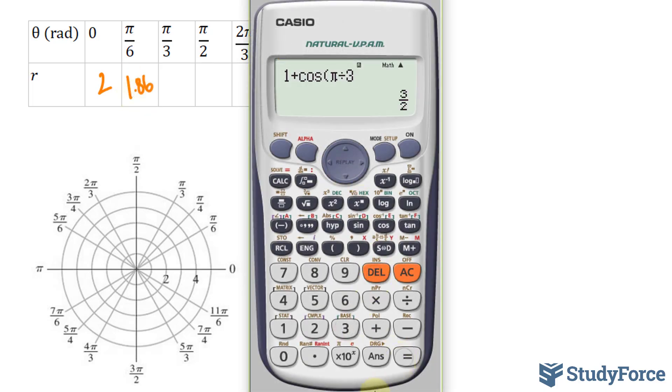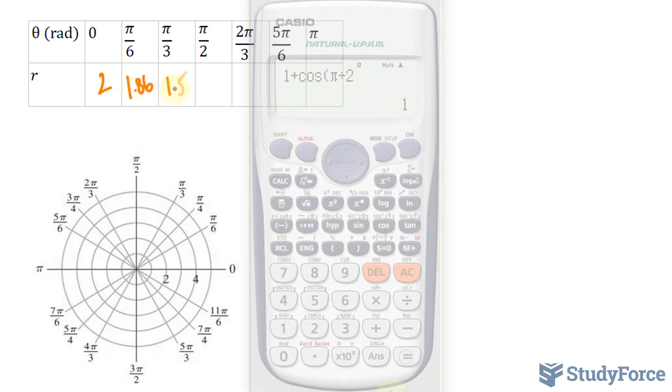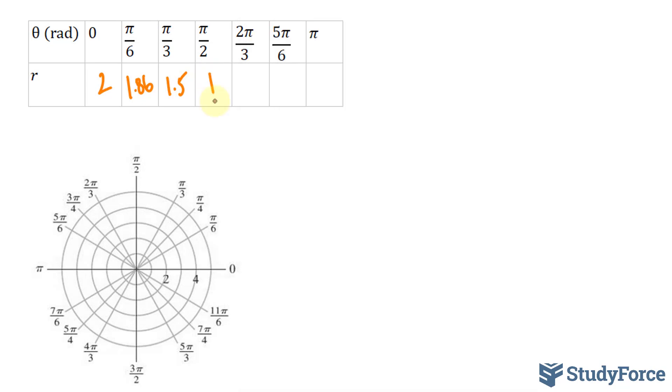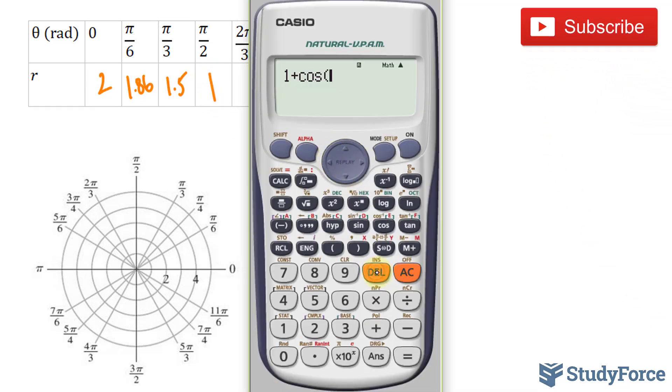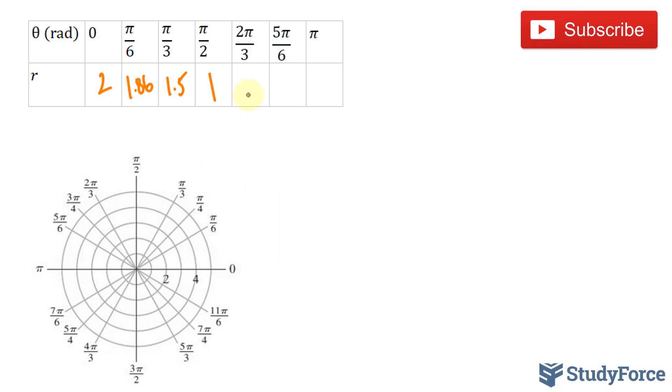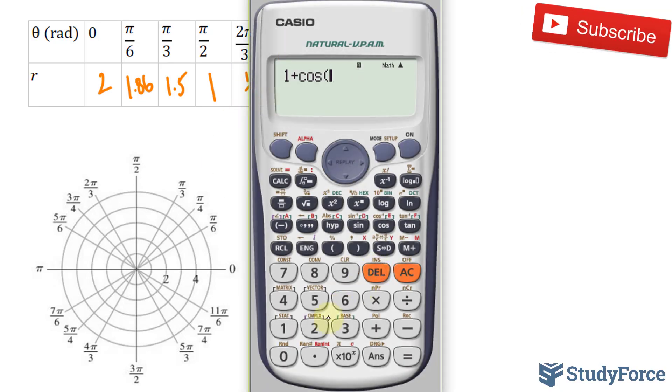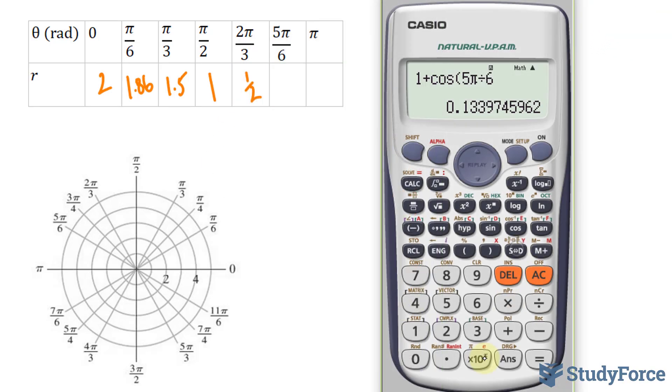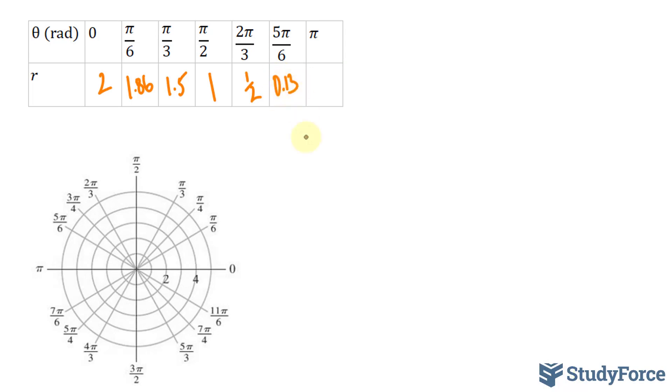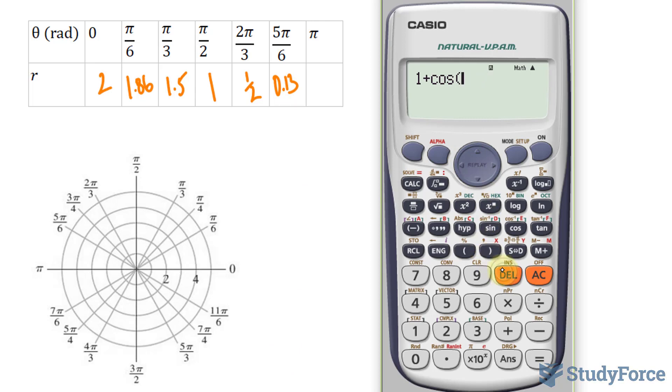Replacing this 6 with a 3, 1.5. Pi over 2 is 1. Now we have 2 pi over 3, that's half. 5 pi over 6, that's equal to 0.13. And finally, cosine at pi is 0.